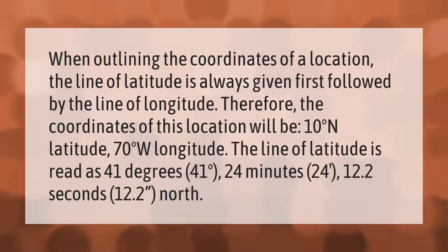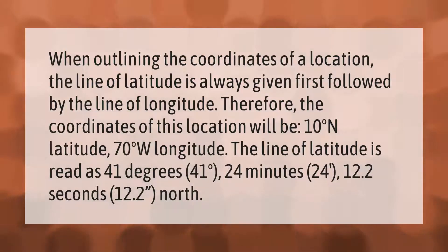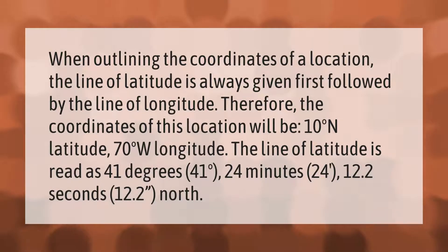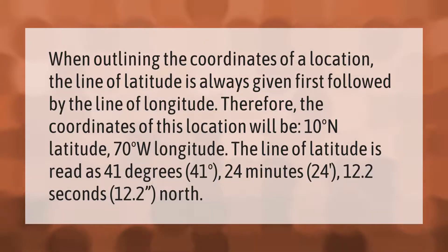When outlining the coordinates of a location, the line of latitude is always given first, followed by the line of longitude. Therefore, the coordinates of this location will be 10 degrees north latitude, 70 degrees west longitude.